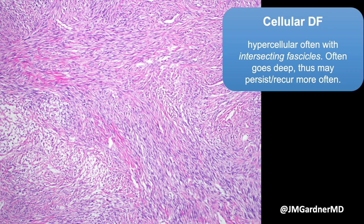People get concerned because it'll be big, cellular, have intersecting fascicles, and mitoses — all of those things are concerning, and yet these tumors are technically benign. There are rare examples of dermatofibroma that can metastasize, particularly to the lungs, and those rare cases tend to be cellular or aneurysmal DFs that are large and deep. However, this is so incredibly rare that I personally don't mention it in my pathology reports.